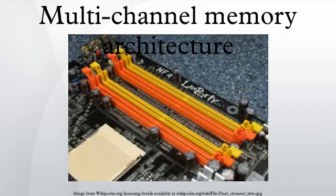Modern high-end processors like the Intel i7 Extreme Series and various Xeon support quad-channel memory. In March 2010, AMD released Socket G34 and Opteron 6100 Series processors with support for quad-channel memory. In 2006, Intel released chipsets that support quad-channel memory for its LGA771 platform. Microcomputer chipsets with even more channels were designed; for example, the chipset in the AlphaStation 600 supports 8-channel memory.